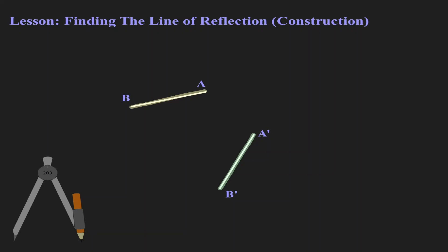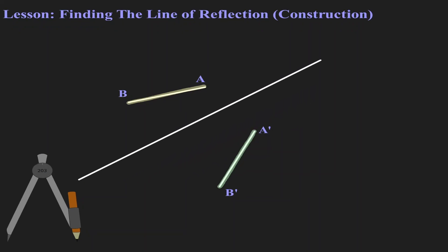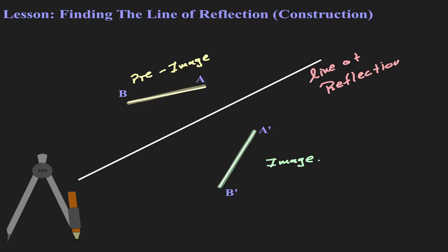We know that this line must be somewhere around here — somewhere between the image and the pre-image. What is the construction that we can do to precisely find this line of reflection?